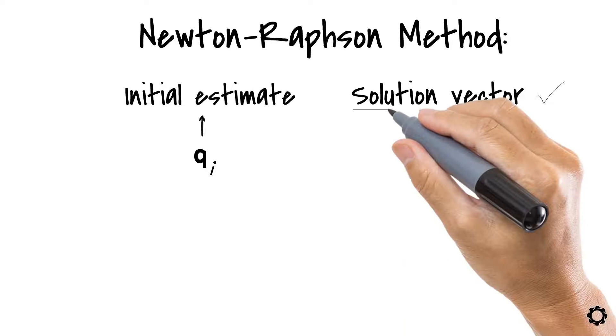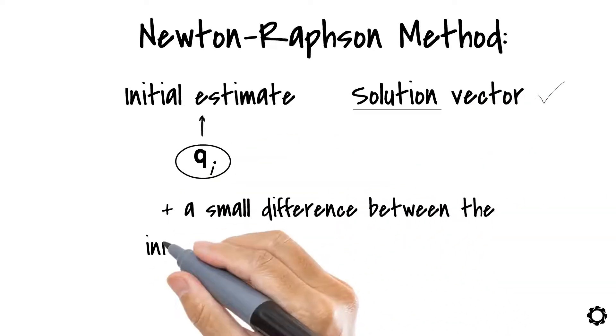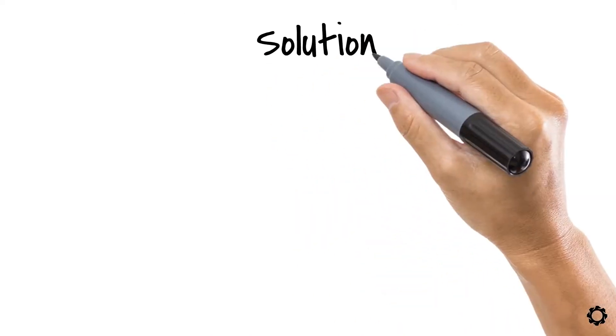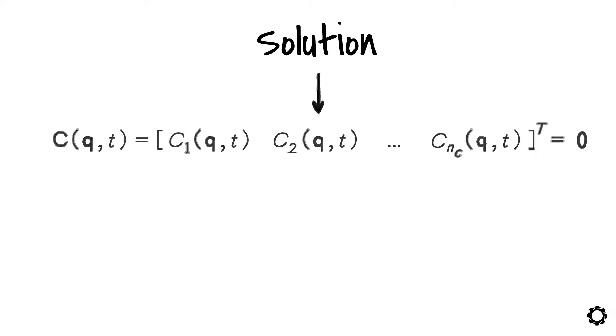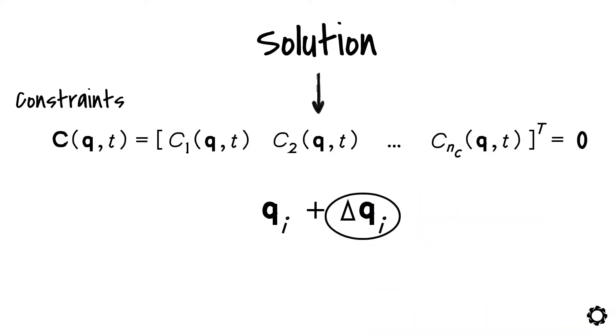We will give the name qi to this estimate. However, the real solution will be the initial estimate plus a small difference between the initial estimate and the real solution, which we will call delta qi. This means that the solution to the set of algebraic equations representing the constraints can be written as qi plus delta qi, where delta qi is given the name of vector of Newton differences.